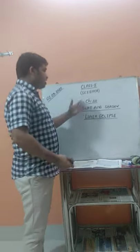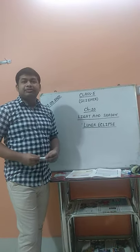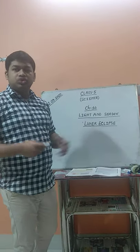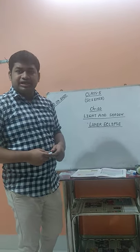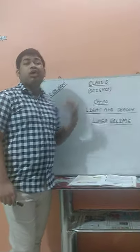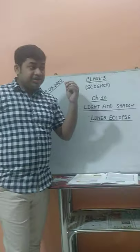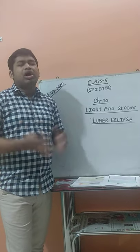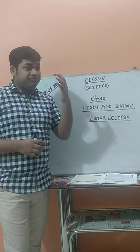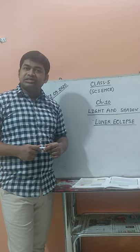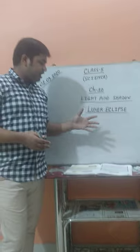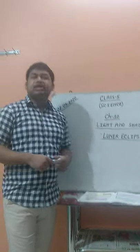Today we shall continue with Chapter 10 about light and shadow. In my last class I already discussed so many things on this chapter — what is light, the different types of light, how shadow is formed, the conditions needed for the formation of shadow, and rotation. Today I have to discuss about the lunar eclipse.